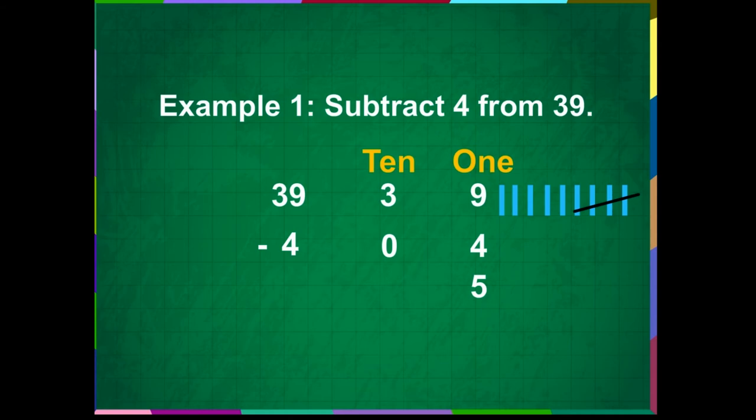In the tens place, it is 3 minus 0, which is 3. So, the answer or the difference is 35.